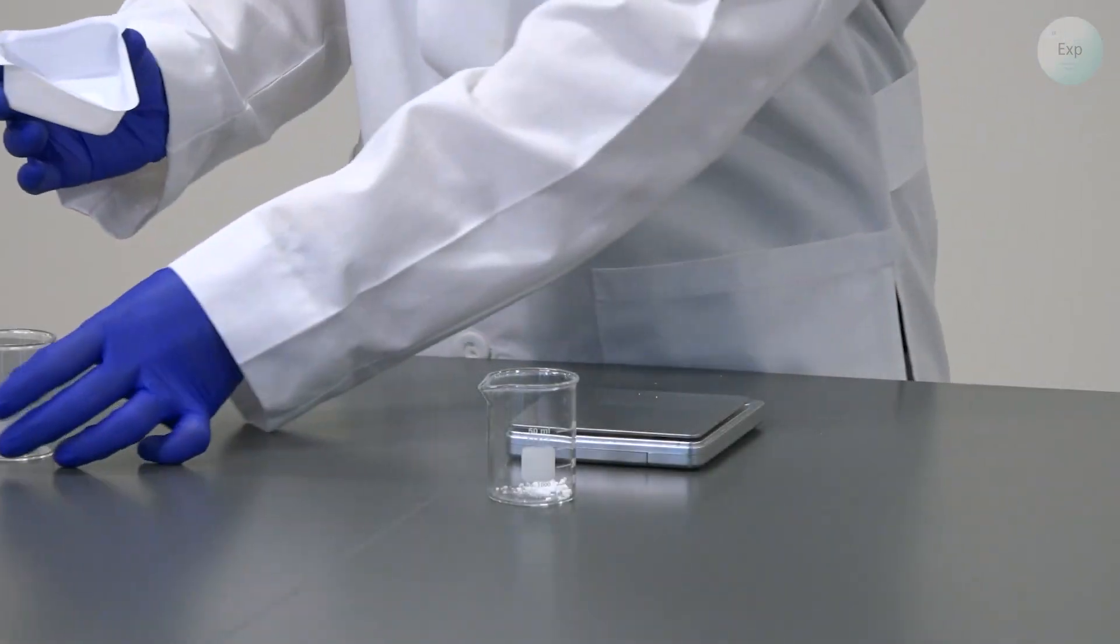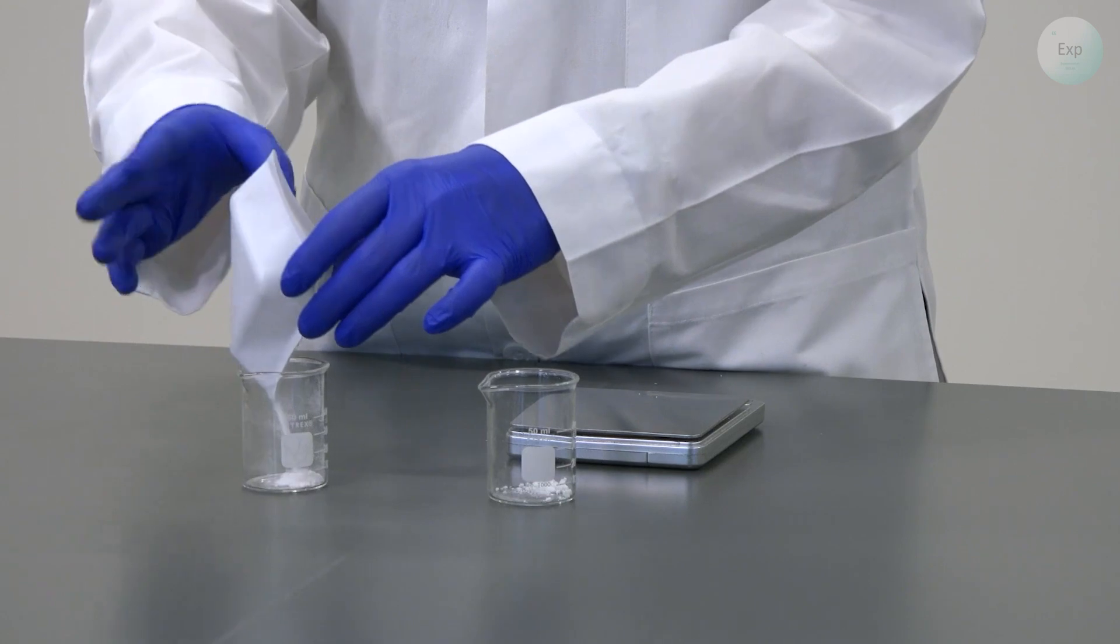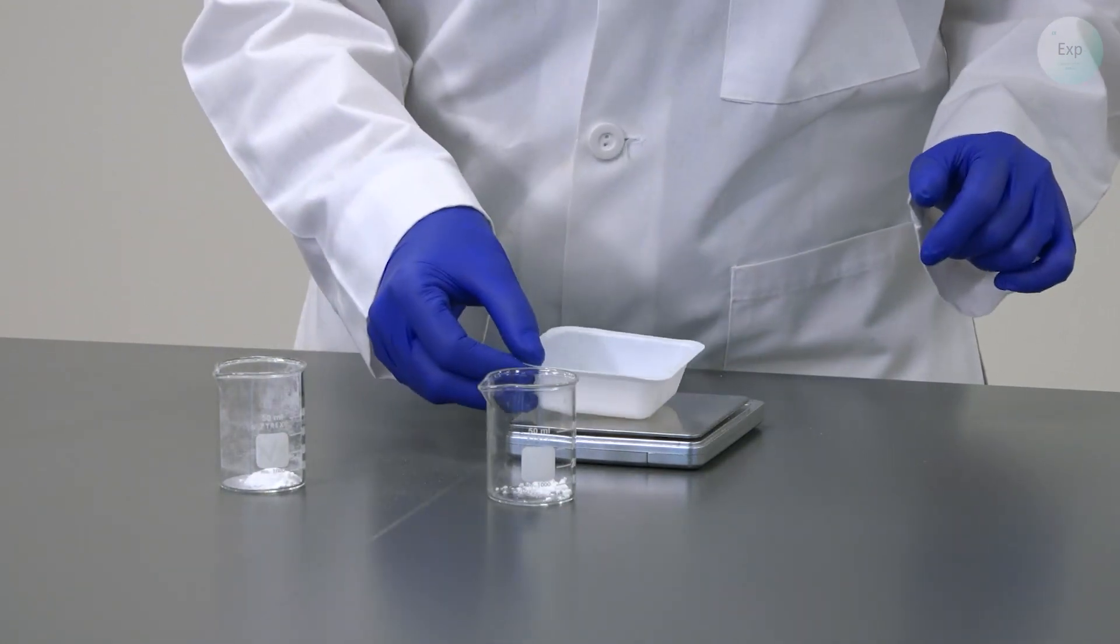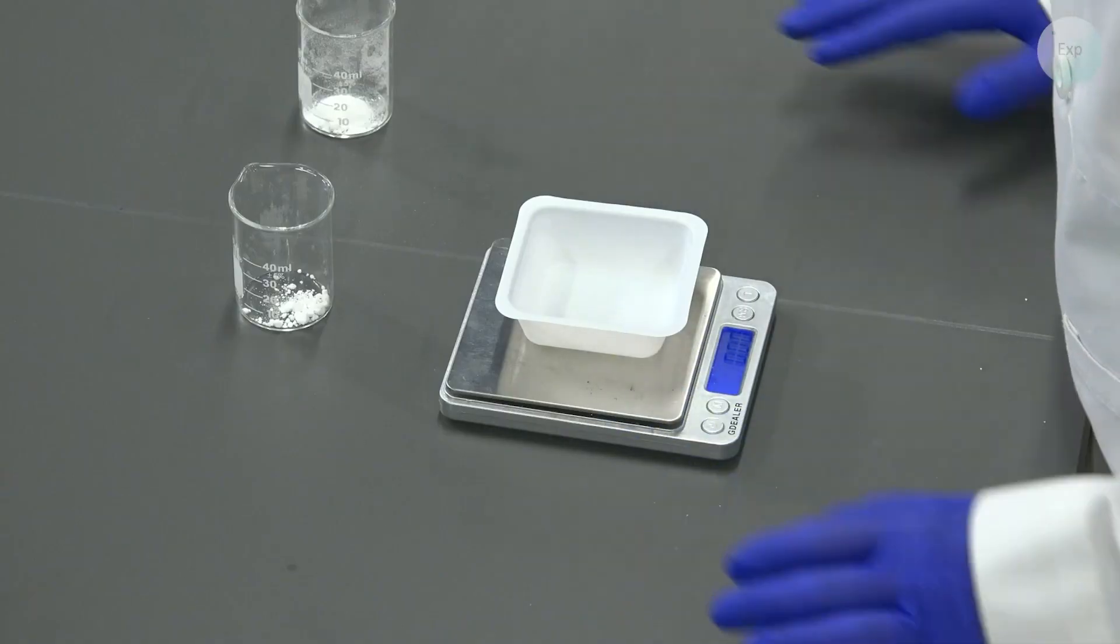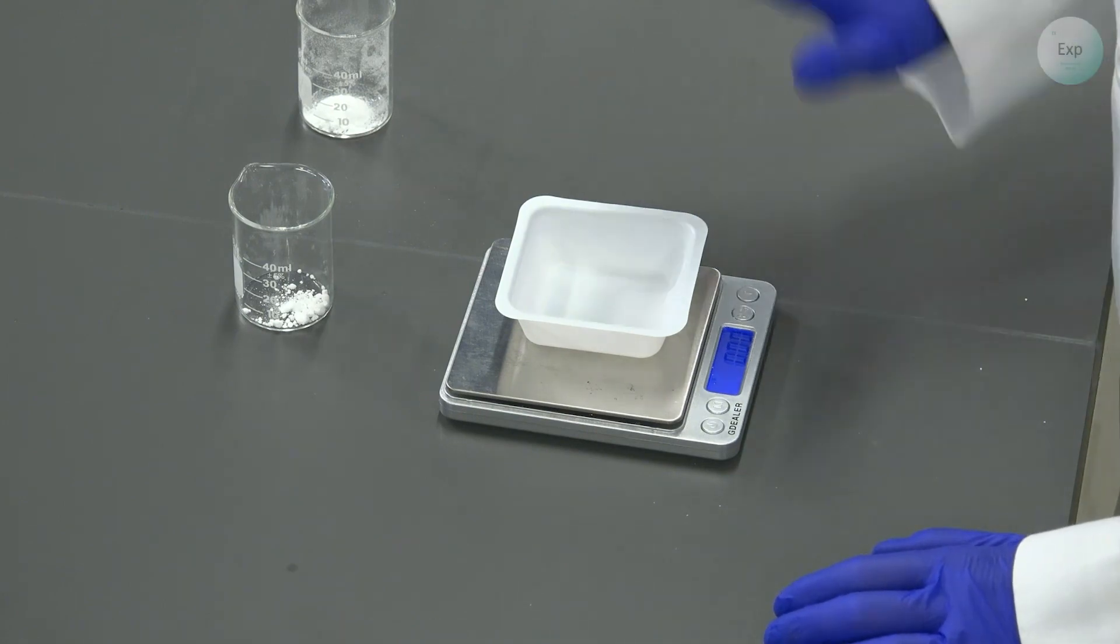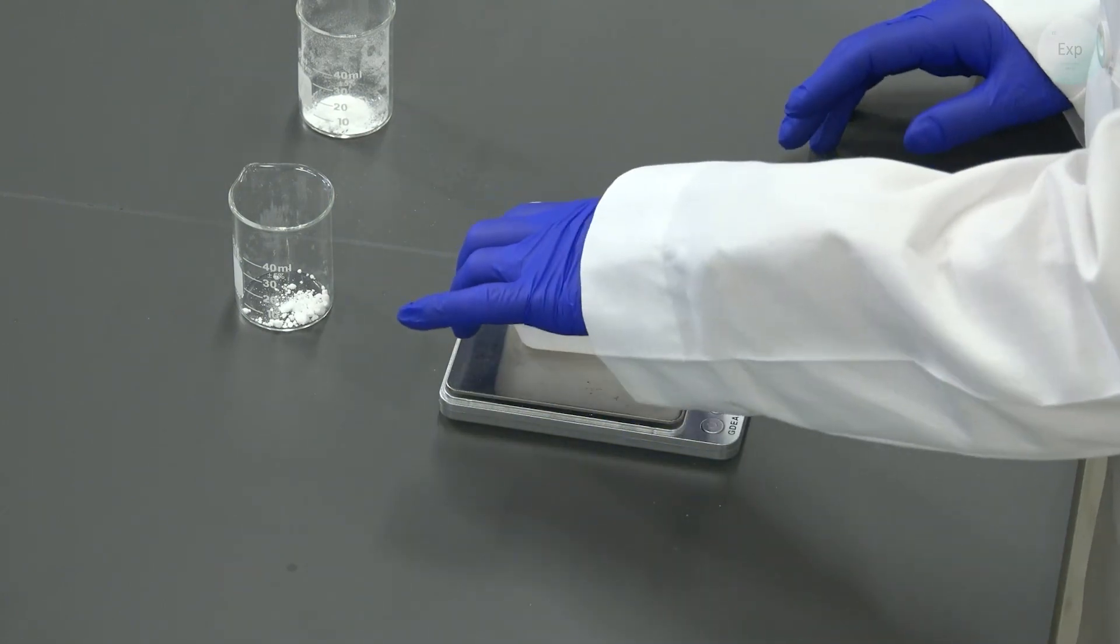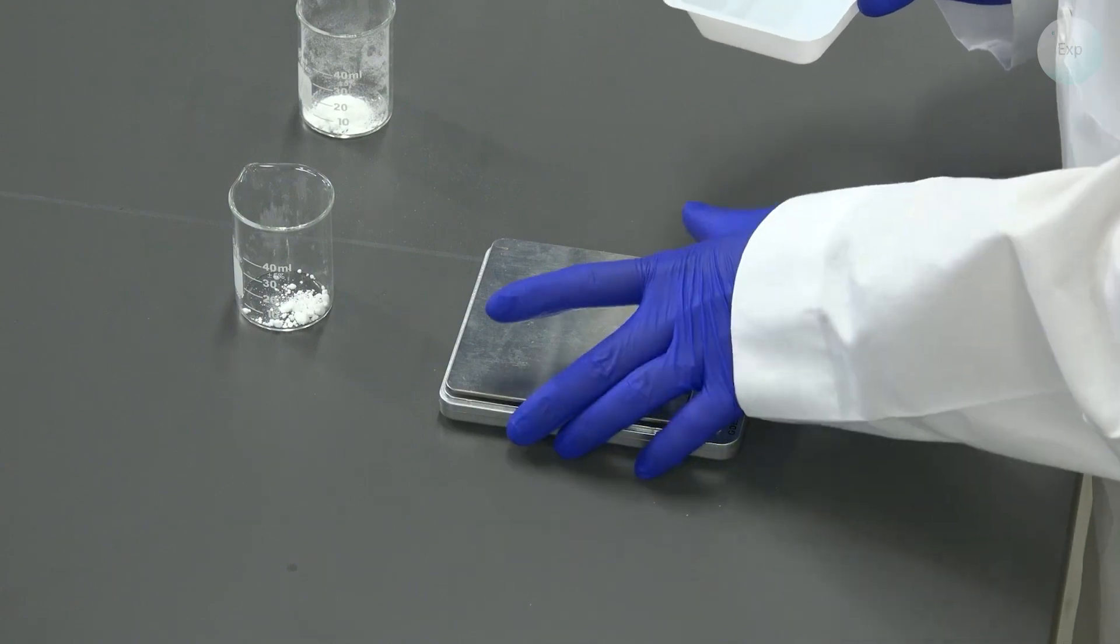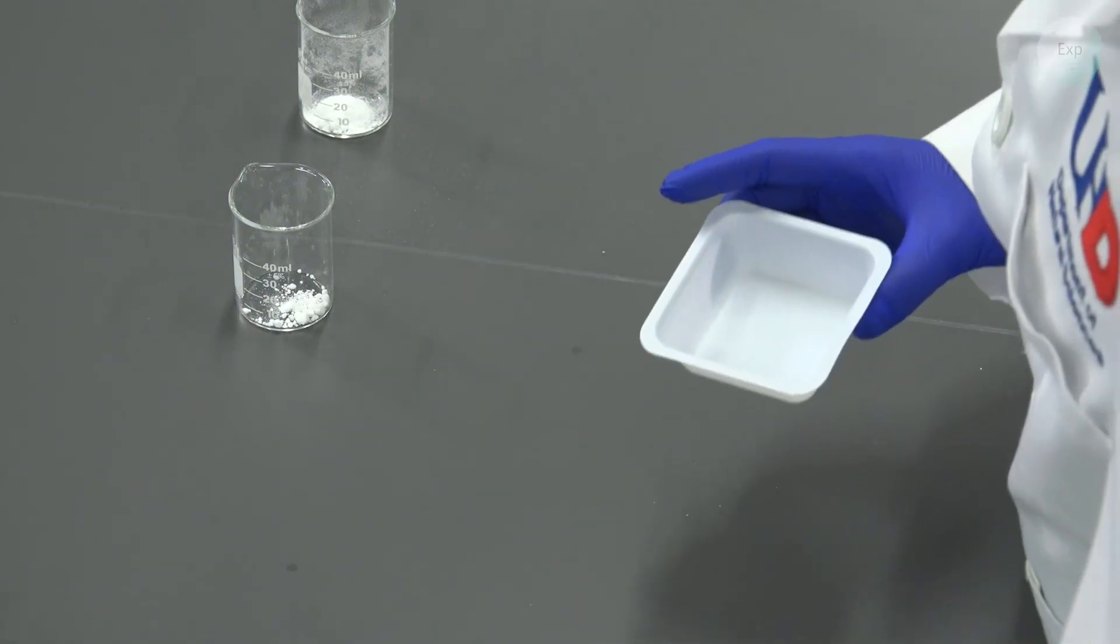Now I will transfer my sodium carbonate in my second beaker, place the weighing boat back on the scale. It shows 0.00, so I have successfully transferred all of it into the beaker. And with this, I am done with all my mass measurements.